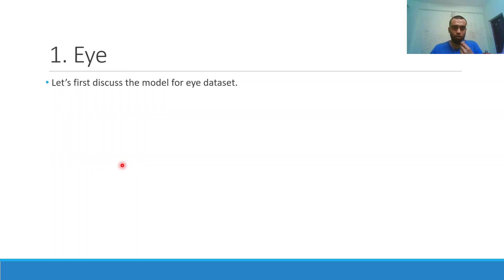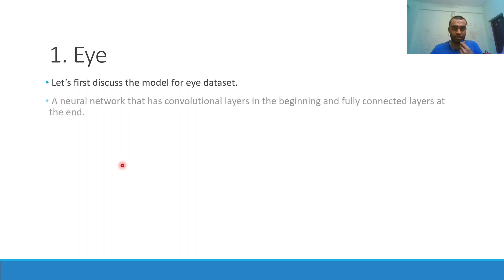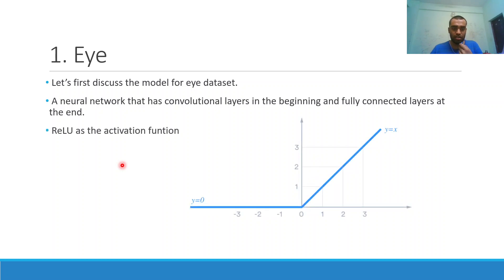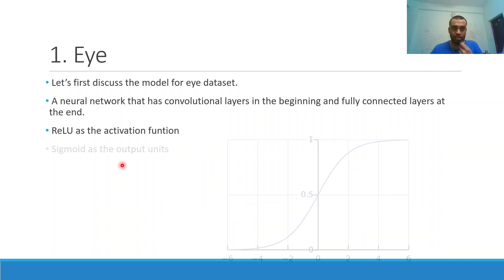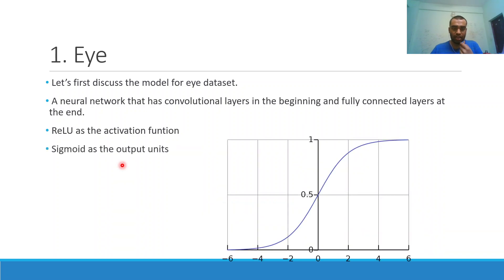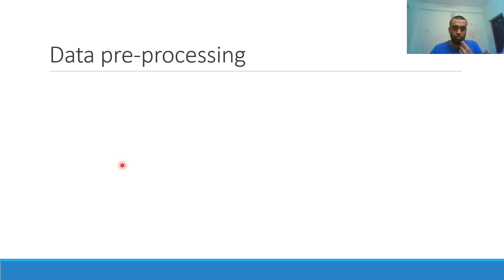For the eye dataset model, the neural network will have convolutional layers at the beginning and fully connected layers at the end. We will use ReLU as the activation function in all hidden layers, while sigmoid will be used as the output unit because this is a binary classification problem — sigmoid gives a real number between 0 and 1 from which we can infer our class.